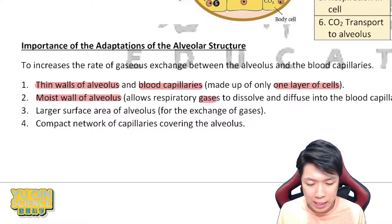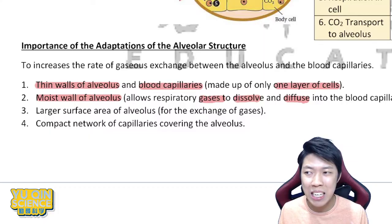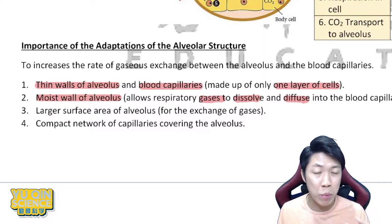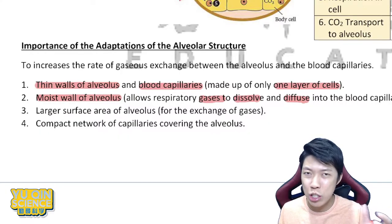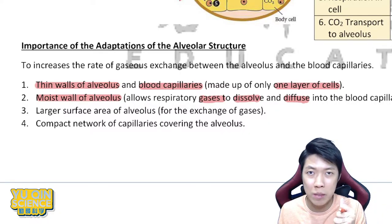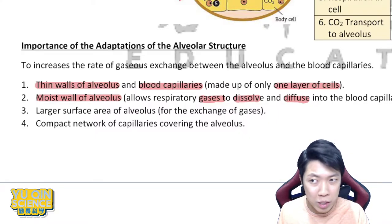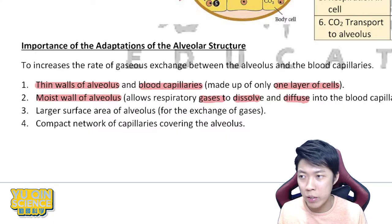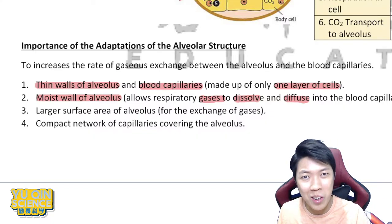Factor two: moist wall. The wall of the alveolus must be slightly moist so that gases can dissolve and diffuse. Dry lungs — like in people who smoke — result in gaseous exchange happening less efficiently because the gas doesn't dissolve or get captured properly. A moist wall makes diffusion happen easily.